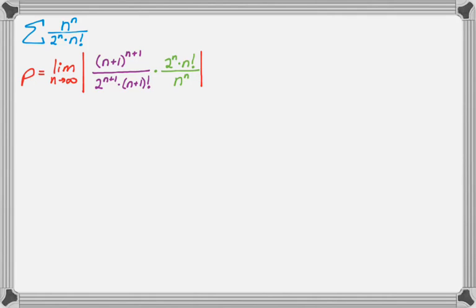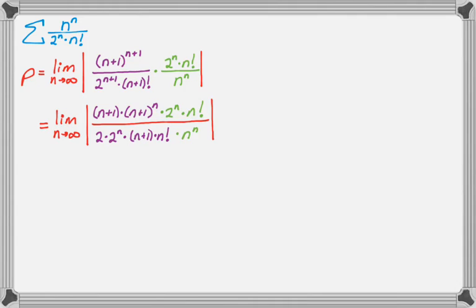So to simplify this, the first thing I'm going to do is I'm going to peel a lot of things apart. So all the n plus 1s, I'm going to kind of peel apart a little bit. So this is going to look a lot longer. So I get n plus 1 times n plus 1 to the n. 2 to the n is still there, n factorial is still there. 2 times 2 to the n times n plus 1 times n factorial, and then times n to the n. So I just peeled apart everything that had an n plus 1. And by doing that, I can see that the n plus 1s are going to cancel, the n factorials are going to cancel, the 2 to the ns are going to cancel, and it leaves me with something that's a lot simpler.